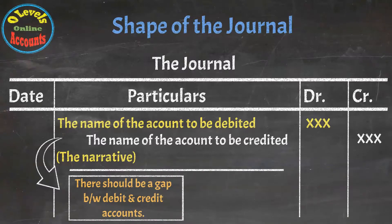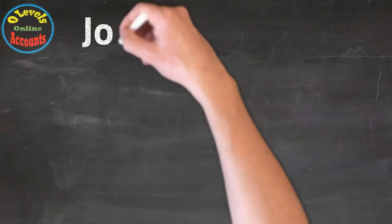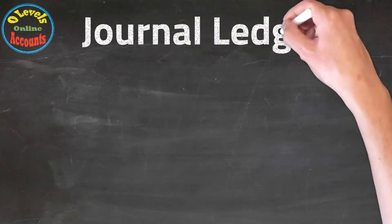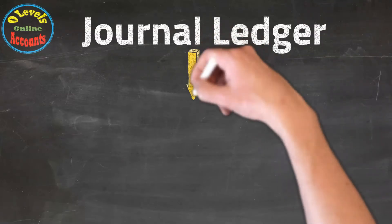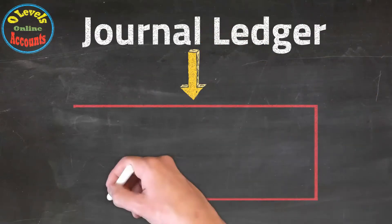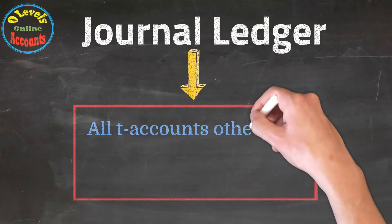In the journal ledger, we will record all T accounts excluding sales ledger, purchase ledgers, and the cash book.